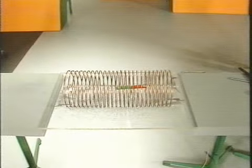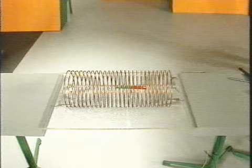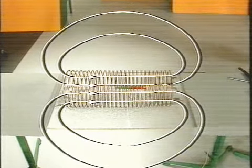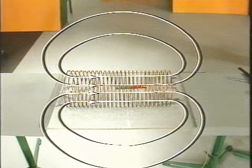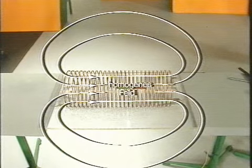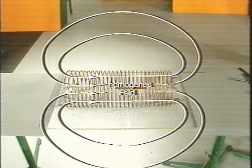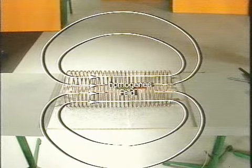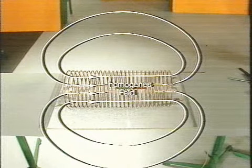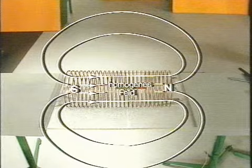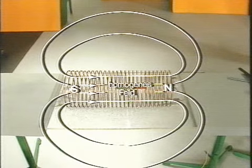Das Magnetfeld hat also im Spuleninneren einen weitgehend parallelen Verlauf. Es handelt sich um ein homogenes Feld, ein homogenes Magnetfeld im Spuleninneren. Die Austrittstelle der magnetischen Feldlinien auf der rechten Seite ist der Nordpol, die Eintrittstelle ist der Südpol der stromdurchflossenen Spule.